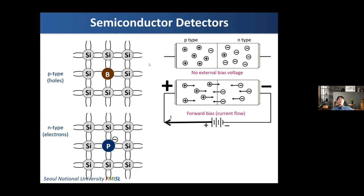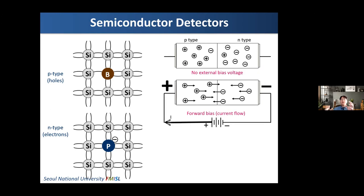A semiconductor radiation detector consists of a combination of p-type and n-type semiconductors — this formation is called a diode. The semiconductor detector is basically a kind of diode. If no external bias voltage is applied to this diode, nothing happens.